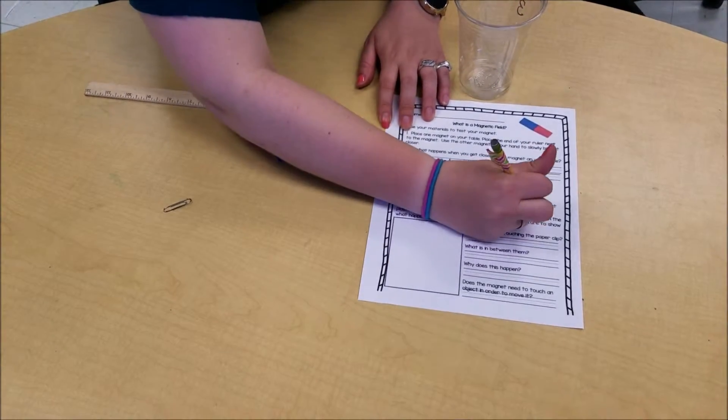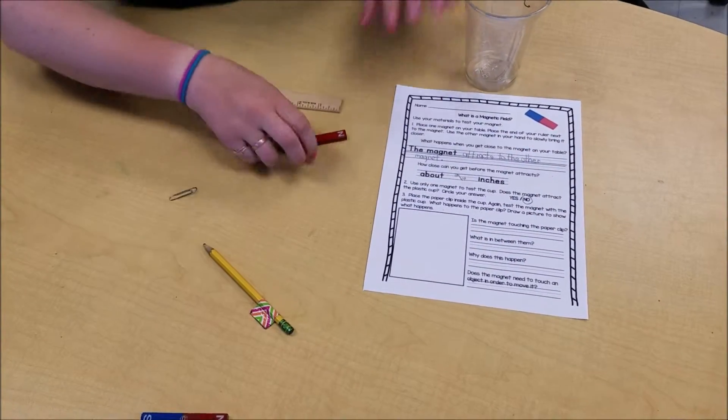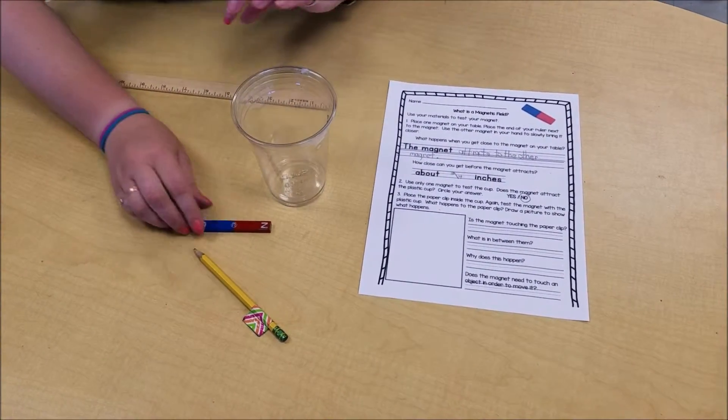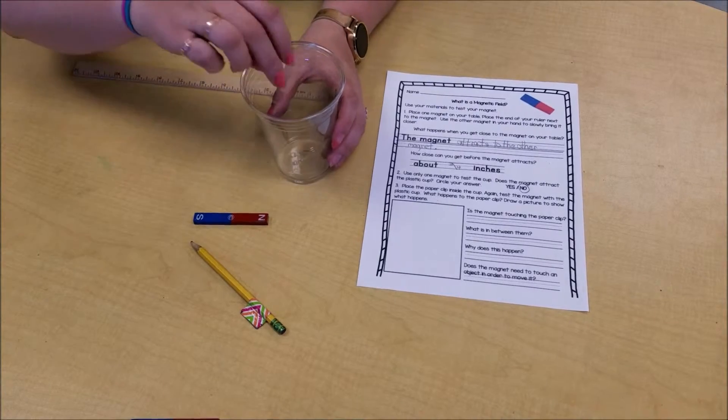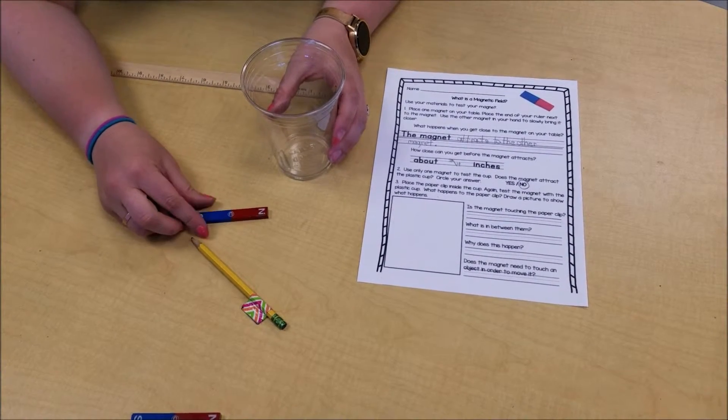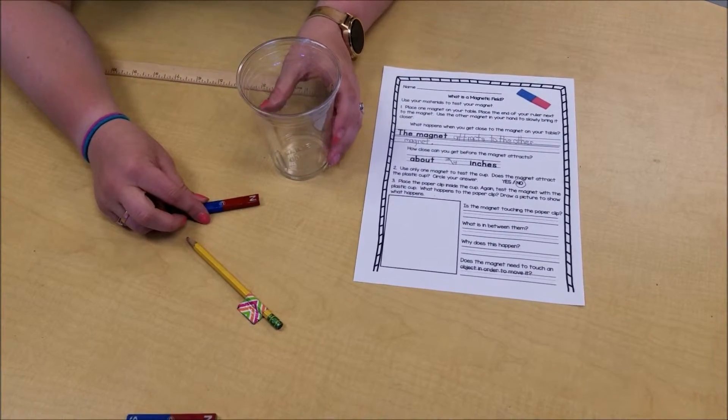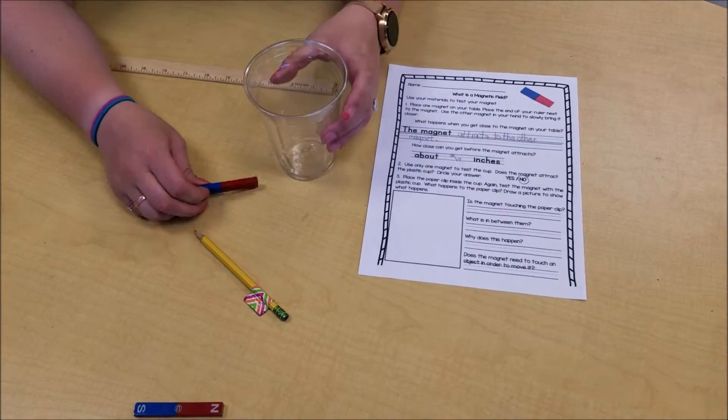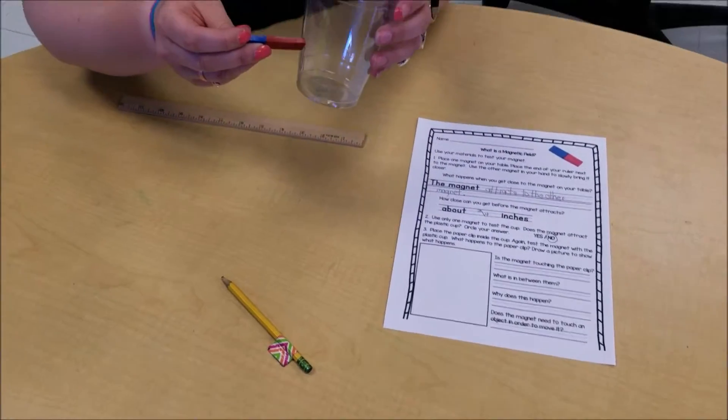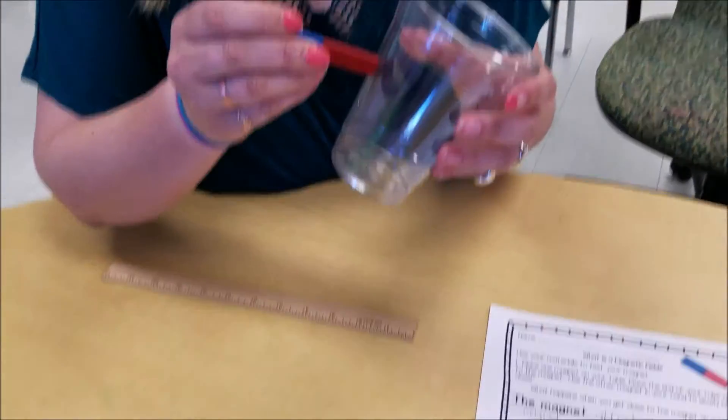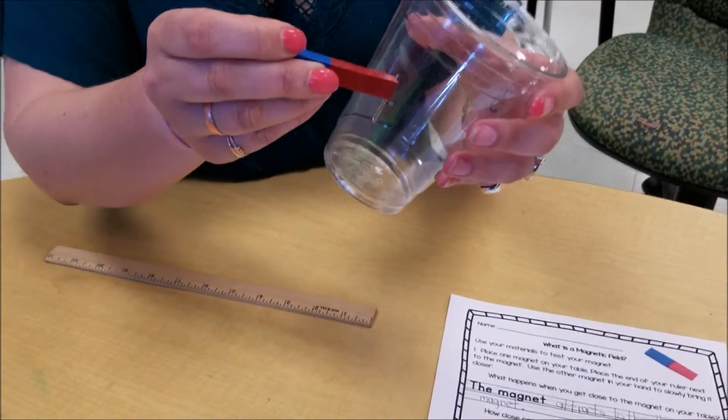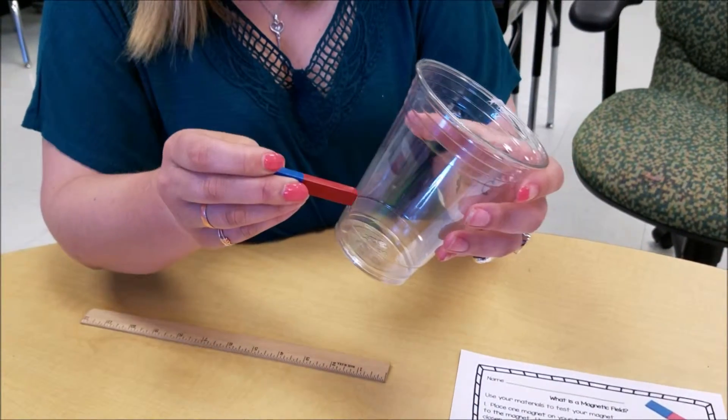Then it says put the paper clip inside the cup. Okay. And it says test the magnet with the plastic cup again. What happens to the paper clip? Oh, the paper clip is magnetic! So the paper clip looks like it's moving wherever I move my magnet in the cup. That's pretty cool.